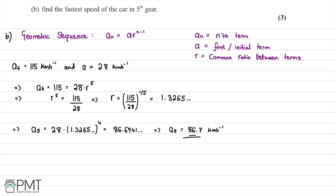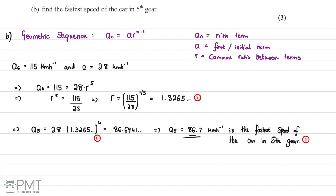So 86.7 kilometers per hour is the fastest speed of the car in fifth gear. This question was worth three marks: the first for working out R, the second for substituting R in to find the fifth term, and the third and final mark for concluding with the correct answer of 86.7 kilometers per hour.